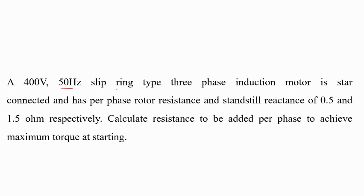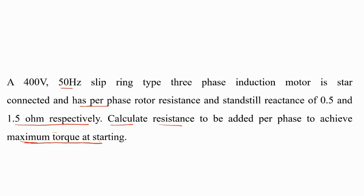A 400 volt, 50 Hz slip-ring type 3-phase induction motor is star connected and has per phase rotor resistance and standstill reactance of 0.5 and 1.5 ohm respectively. Calculate the resistance to be added per phase to achieve maximum torque at starting. The question is: what value of resistance should be added in the rotor of the slip-ring induction motor so that we get maximum starting torque?